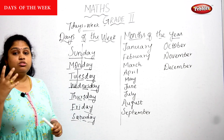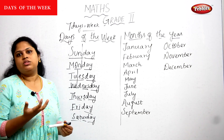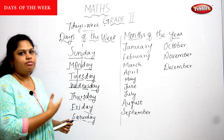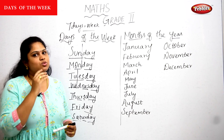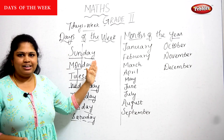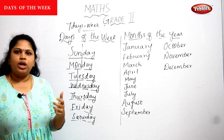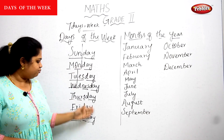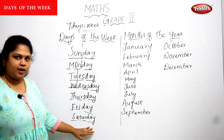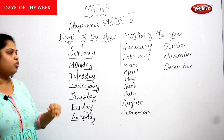Most children struggle to memorize the spellings of the days of the week and the months of the year. Splitting words is the best solution. See here — every day has the same spelling ending: D-A-Y. From Sunday to Saturday, just split it and read it, and you will remember it easily.